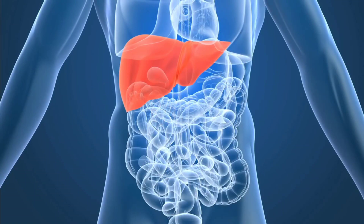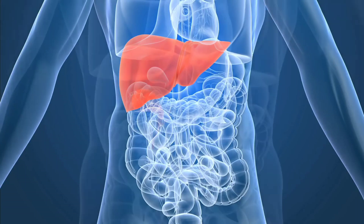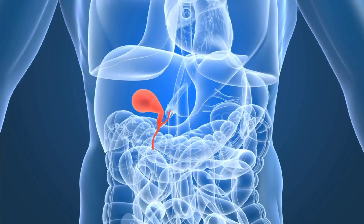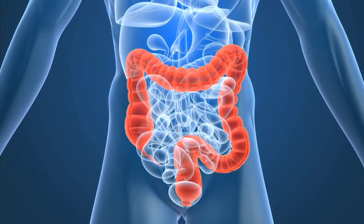The liver has many functions. In digestion, its main roles are to make and secrete bile, and to process and purify blood containing newly absorbed nutrients from the small intestine. Bile helps absorb fats and carries waste from the liver that cannot pass through the kidneys. Bile travels through bile ducts to the small intestine; if not needed immediately, it is stored in the gallbladder — a pear-shaped reservoir under the liver — which then sends it to the small intestine as needed.